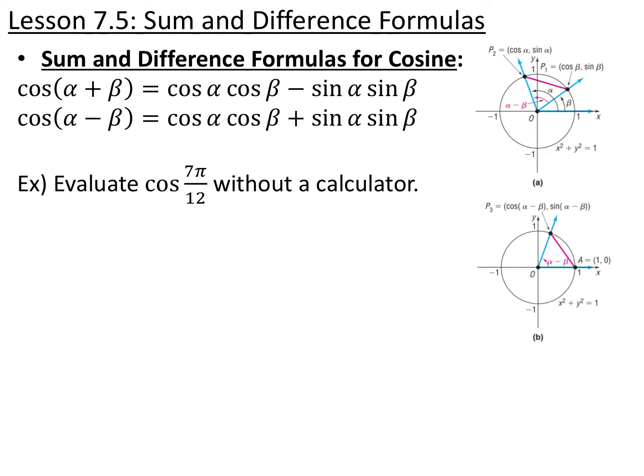Section 7.5 covers sum and difference formulas. These apply when we are adding or subtracting angles inside of a trig function, because we can't just distribute the trig function. For example, the cosine of angle alpha plus angle beta equals cosine alpha times cosine beta minus sine alpha times sine beta. And cosine of alpha minus beta equals cosine alpha cosine beta plus sine alpha sine beta. These little pictures represent how we get them based on whether we're adding or subtracting the angles.